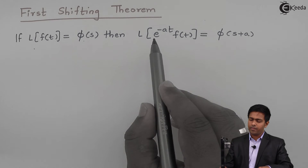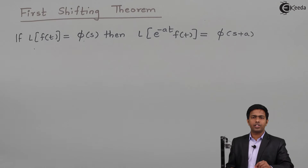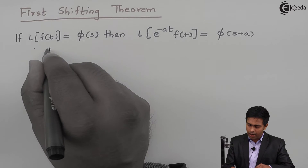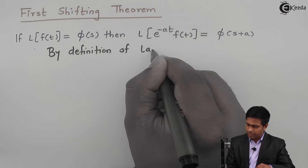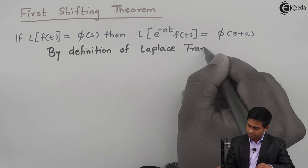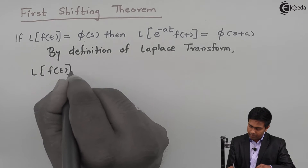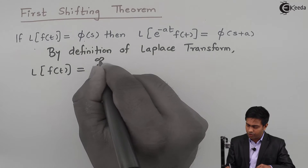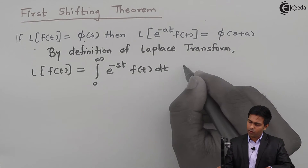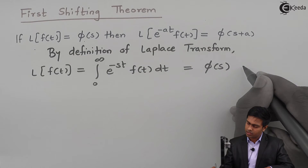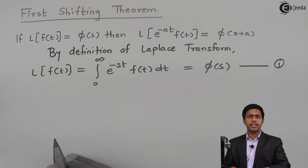First of all, let's derive this property or theorem. To derive this theorem, I am going to use the definition of Laplace transform. By the definition of Laplace transform, we have: Laplace of f(t) is equal to the integration from 0 to infinity of e raised to minus st into f(t) dt, and its value is given by F(s). I will call this equation number 1. Whenever we solve this integration, we get F(s) as the answer.